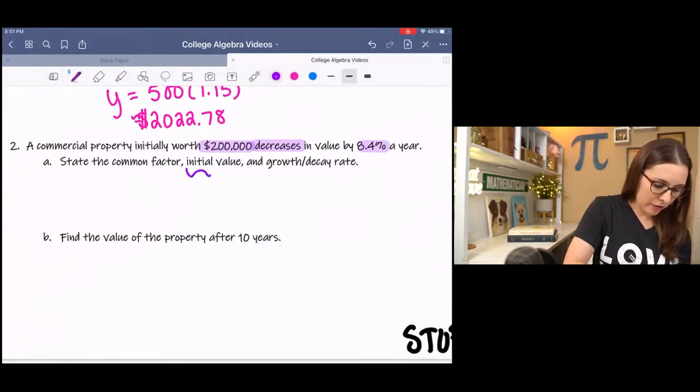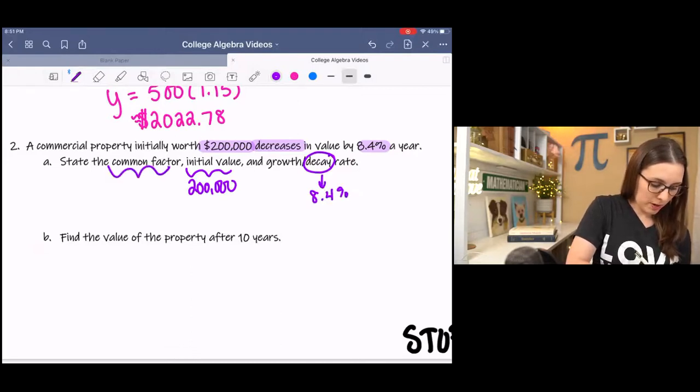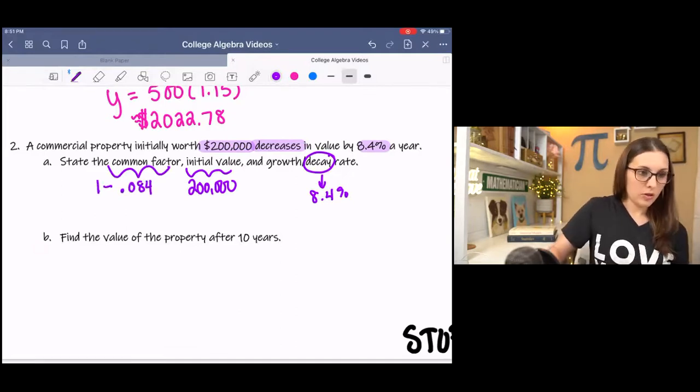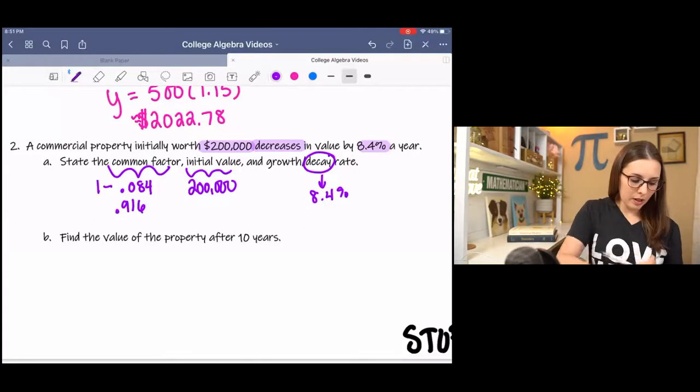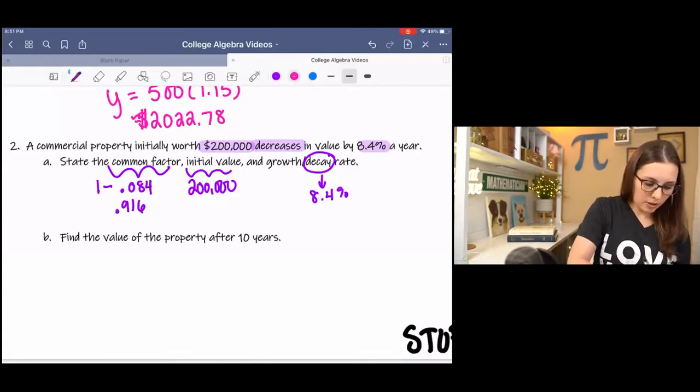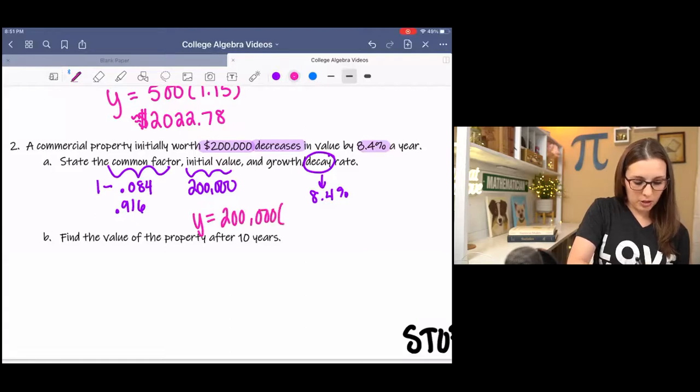Hopefully, you got the initial value was $200,000. The decay rate was 8.4%. Which made the change factor 0.916. So my equation is y equals the initial value times the change factor to the x.